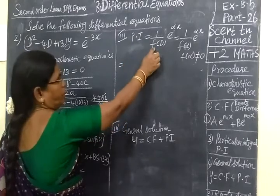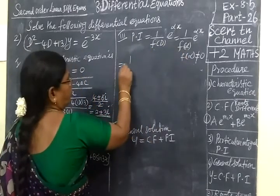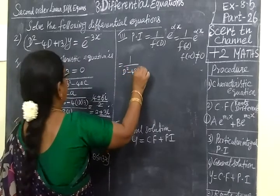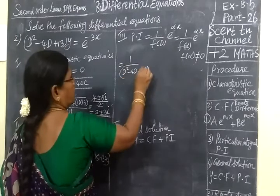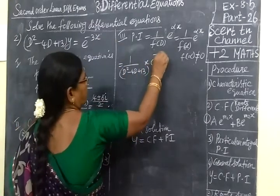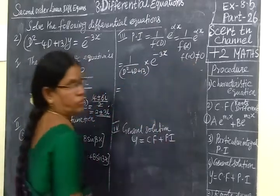Equal to 1 by f of d. We are substituting 1 by d square minus 4d plus 13 into e power alpha x minus 3x. Provided f of alpha not equal to 0, denominator not equal to 0.